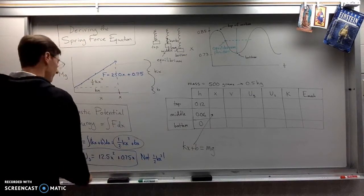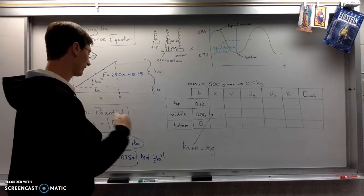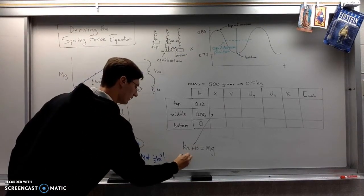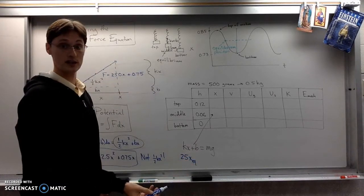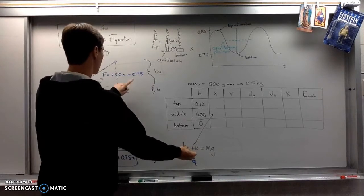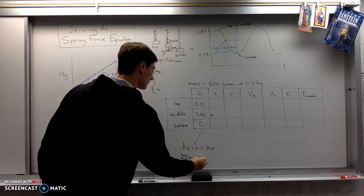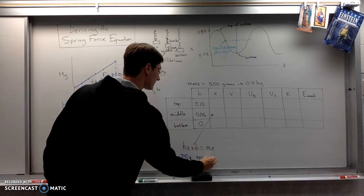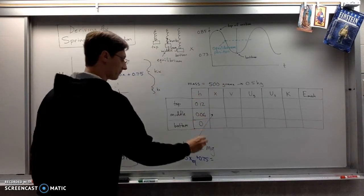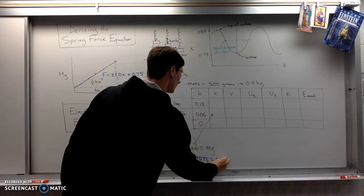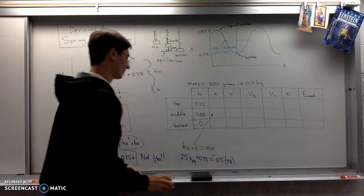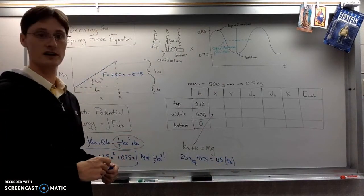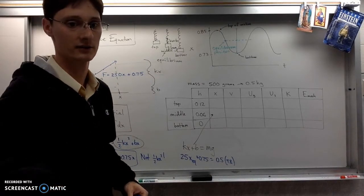if I've got K is 25, I'm trying to solve for the equilibrium extension. My loading force B is 0.75. My mass was 0.5 kilograms and gravity is 9.8. I should be able to do a little bit of algebra and solve for my equilibrium extension, which I will spare you.